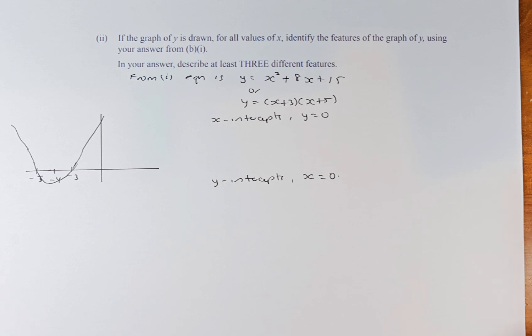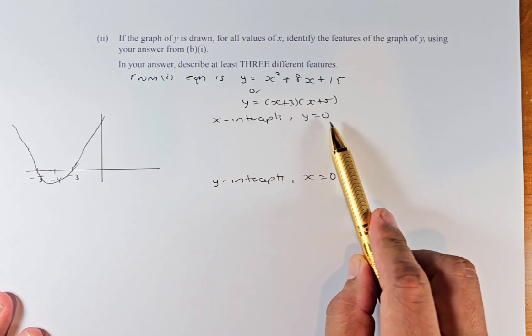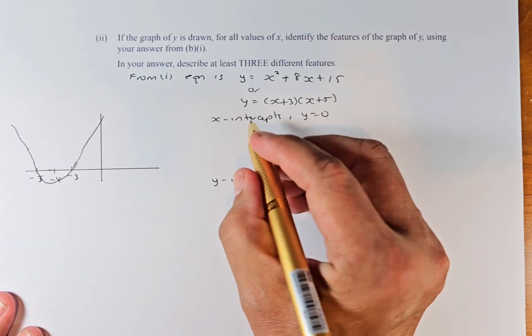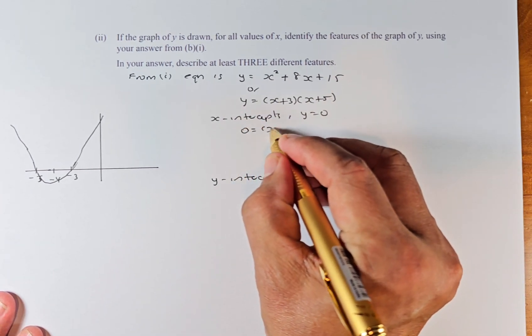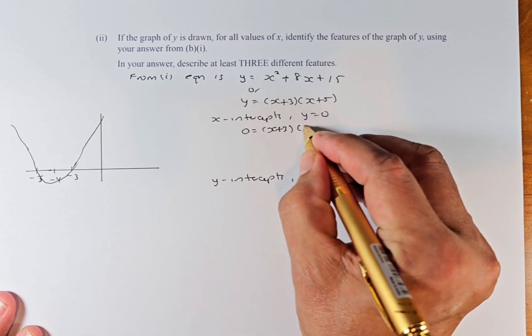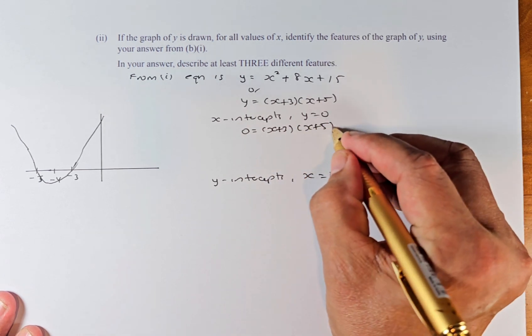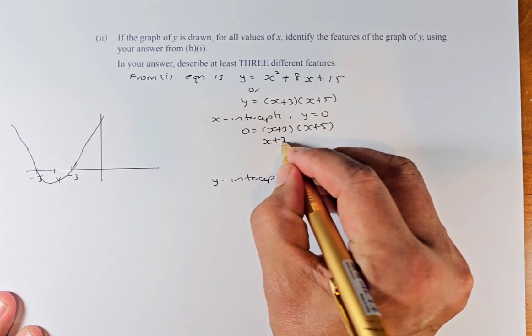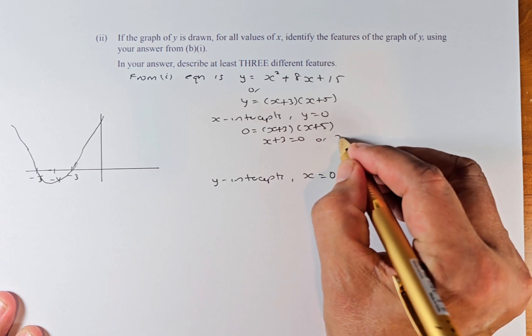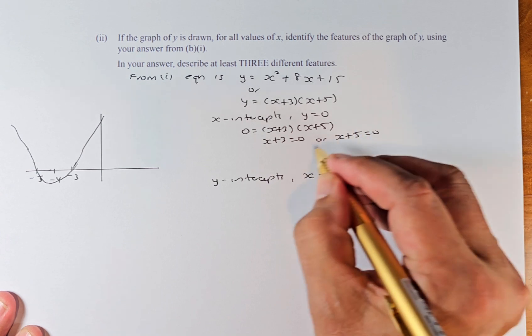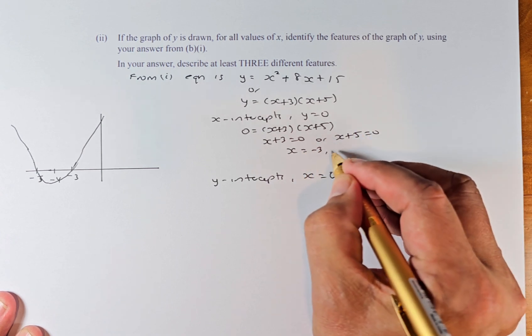So to calculate the X intercept, very simple, you make Y equal to 0. So now we're going to put 0 equals X plus 3 times X plus 5. So in other words, X plus 3 equals 0 or X plus 5 equals 0. So X equals minus 3 or minus 5.